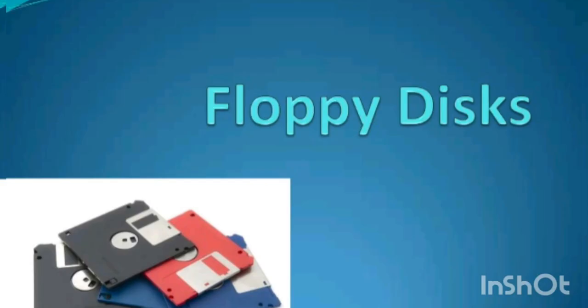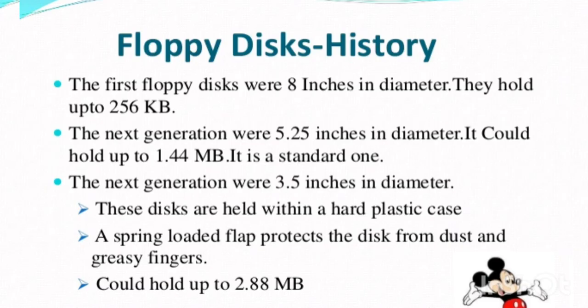First, we are going to see the floppy disk. The floppy disk is one of the secondary storage devices. This is the first floppy disk — an 8-inch floppy disk that holds 256 kilobytes of data. The next generation was 5.25 inches in diameter, a little smaller compared to the first floppy disk, and it has a capacity to hold 1.44 megabytes (MB). It is a standard floppy disk.